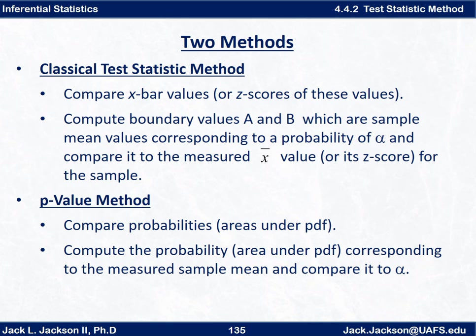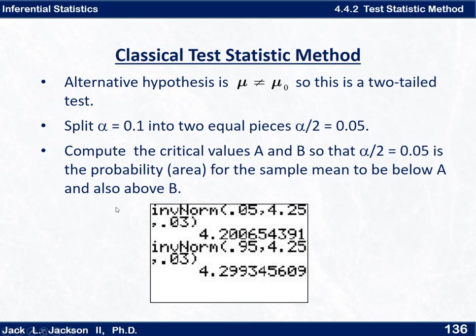We have two choices at this point. We can compute x-bar values or z-scores and compare them to each other, or we can compute probabilities. This one we're going to be using the classical test statistic method. The alternative hypothesis is that mu is not mu zero, so it's a two-tailed test. What we do is we take our alpha and split it into two equal pieces, each of size alpha over 2, which is 0.05. So we want to compute critical values A and B so that the alpha over 2, 0.05, is the probability to be below A and also above B.